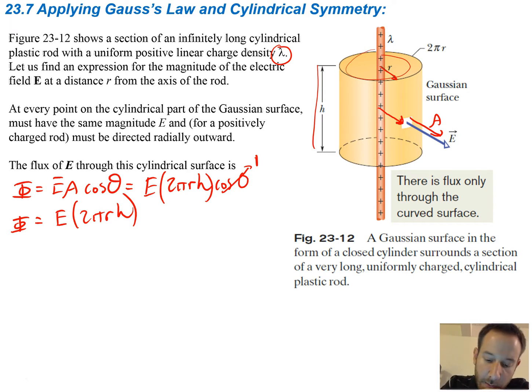Now we want to take the other equation we have for flux, which is Gauss's law. It relates it to the enclosed charge. So we have epsilon naught times our flux is going to be equal to our enclosed charge. Now plugging in what we just got for flux, it's going to be E times 2πRH. That's equal to the enclosed charge.